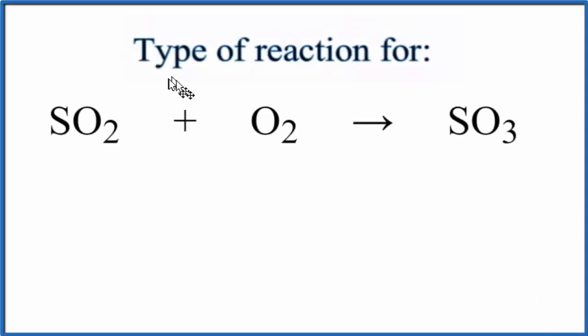In this video we'll take a look at the type of reaction for SO2 plus O2 yields SO3. We have sulfur dioxide plus oxygen gas and that's giving us this sulfur trioxide. So when I look at this equation here